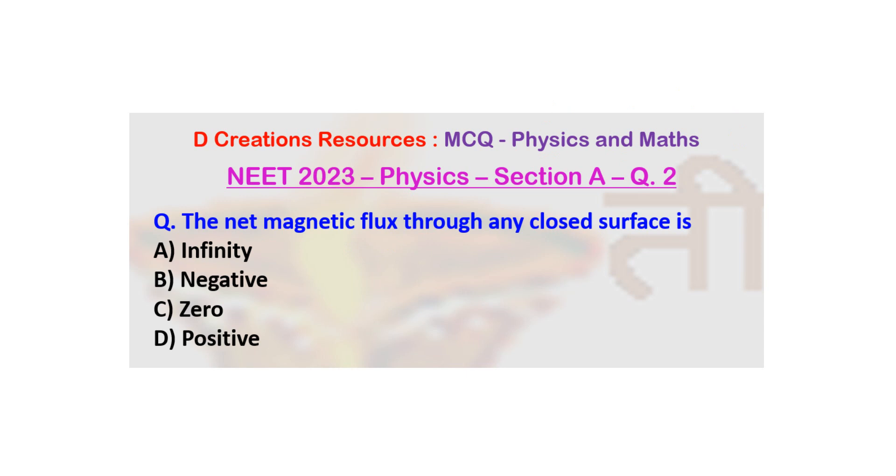This question was also part of NEET exam in 2023 in the Physics section A. Now the question is: the net magnetic flux through any closed surface is, and the options are infinity, negative, zero, and positive.